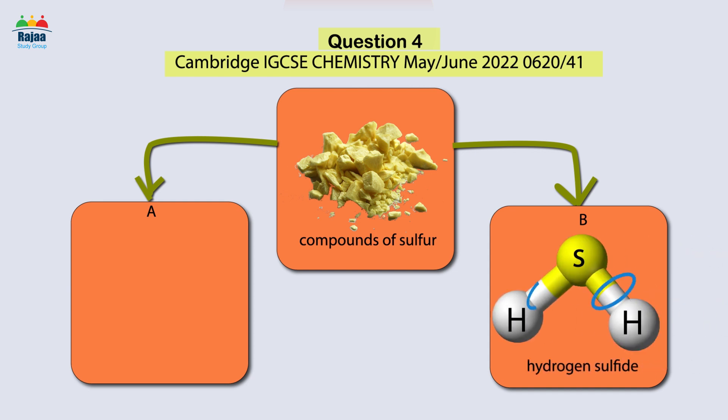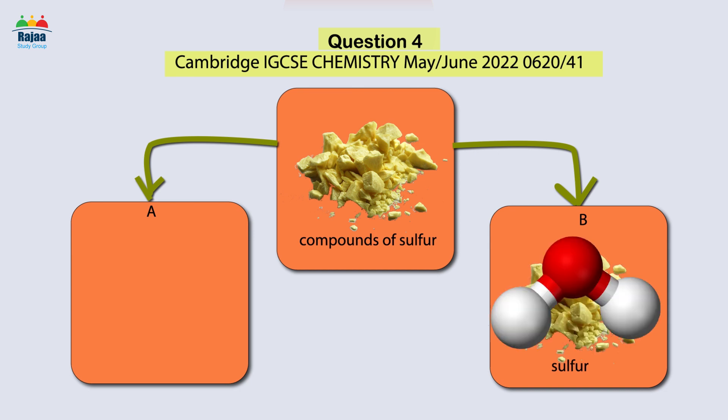In section B, the exam's author inquired about hydrogen sulfide and the covalent bond that forms this compound, as well as its reaction as a poisonous gas with another toxic gas, sulfur dioxide, in the presence of moisture to produce sulfur and water.